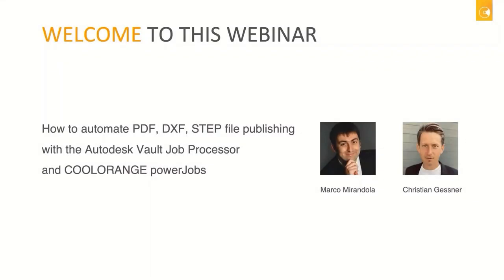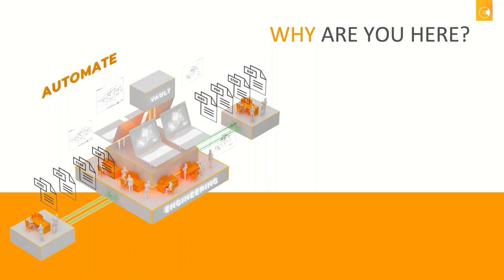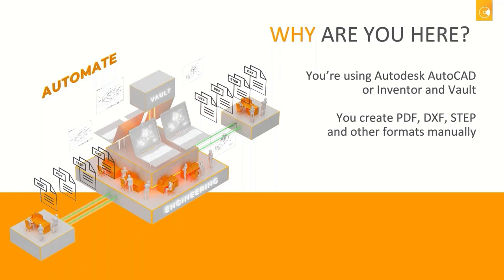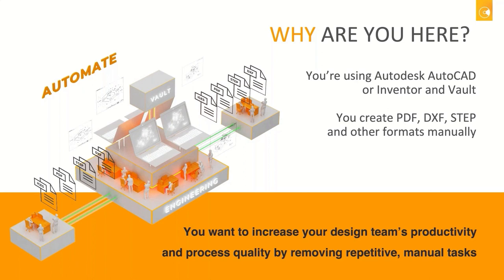Hello everyone and welcome to this webinar. My name is Marco and together with me is Christian. Today we're going to show you how to automate PDF, DXF and STEP publishing using the Autodesk Vault Job Processor together with Cool Orange PowerJobs. If you're here, it's probably because you're running AutoCAD or Inventor, and you may or may not use Vault, but you are creating PDF, DXF, STEP files or other formats manually — which is quite time-consuming — and you want to increase your design team's productivity by removing repetitive and manual tasks.